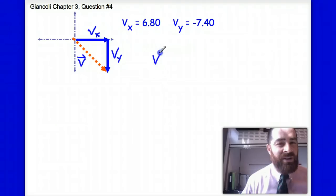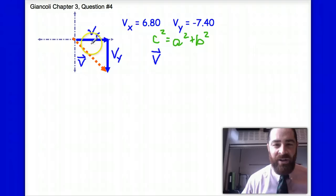I can basically find that by using the Pythagorean theorem. So I should recognize that c squared is equal to a squared plus b squared. And as I look at this right triangle here, the velocity vector v is the hypotenuse. Therefore, I can say the velocity vector v squared is equal to vx squared plus vy squared.